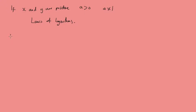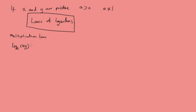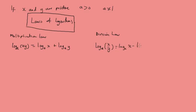Firstly we have the multiplication law, which states that log base a of xy is equal to log base a of x plus log base a of y. Then we've got the division law: log base a of x over y equals log base a of x minus log base a of y.